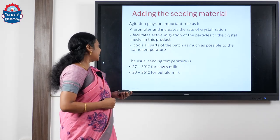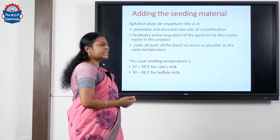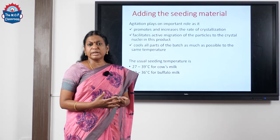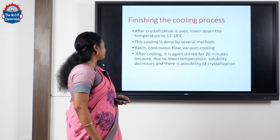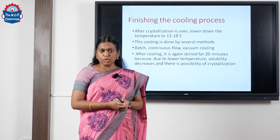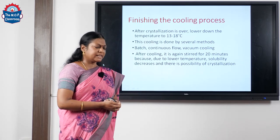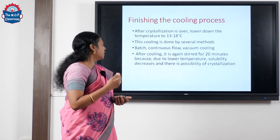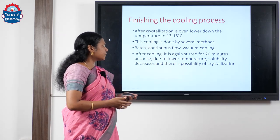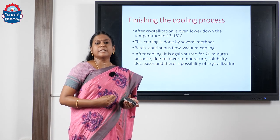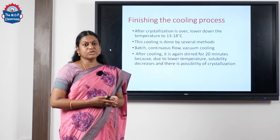The seeding temperature is around 27 to 39°C for cow's milk, 30 to 36°C for buffalo's milk, and around 30 to 40°C for a combination of milk. After crystallization is complete, we cool the product down to 13 to 18°C, using any method — batch method, continuous flow, or vacuum cooling. After cooling, stirring is continued for around 20 minutes so that the solubility of lactose is maintained.